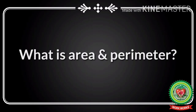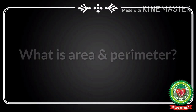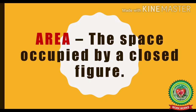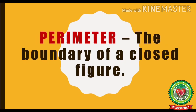But first let us understand what is area and perimeter. Area is the space occupied by a closed figure. Perimeter is the boundary of a closed figure.